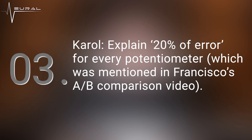Question three. Carl asks: explain the 20% margin of error for every potentiometer, which was mentioned in Francisco's A/B comparison video. Francisco, co-owner of Neural DSP, did a fantastic comparison video between Neural DSP's Nameless and the physical model of Fortin's Nameless amp. He mentions that each potentiometer is within a 20% margin of error to the physical models. This means that even when you compare two of the same physical model, the potentiometers on both are going to be slightly different — each potentiometer when manufactured has very slight variances or imperfections which make it interact with the signal differently.